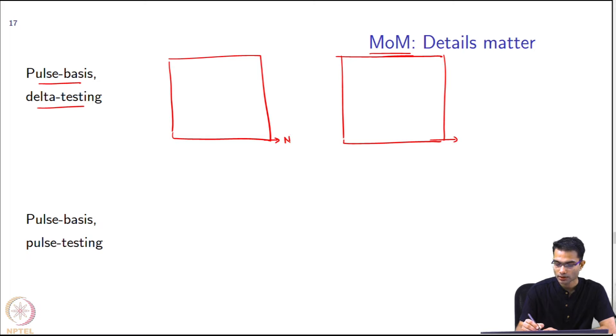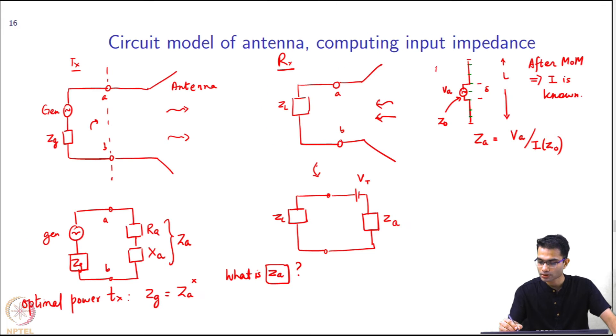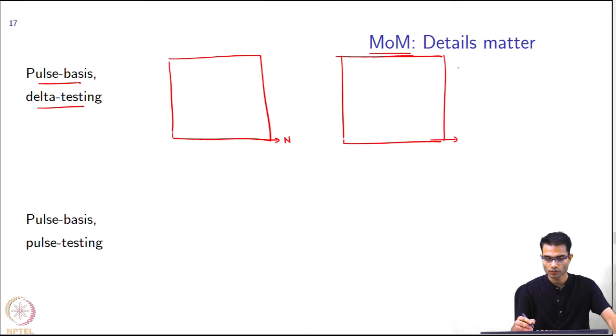In other words you increase this capital N, the number of segments. I want to study for example this Z_A which I am going to write as R_A plus j X_A. So let me look at what happens to R_A and X_A as I increase the number of segments. I would expect some kind of numerical convergence to happen.